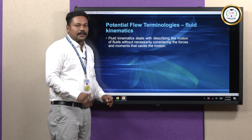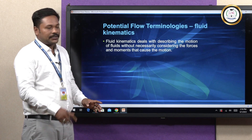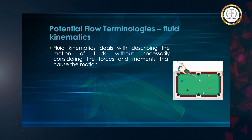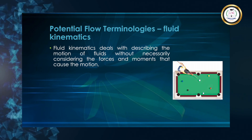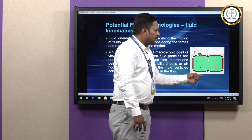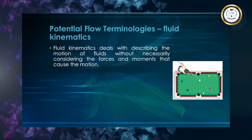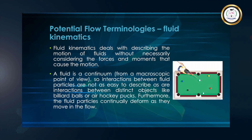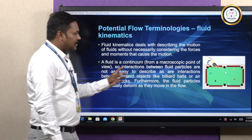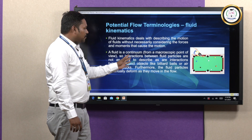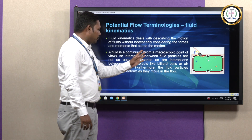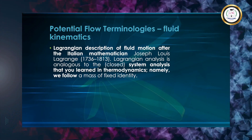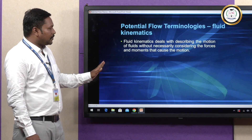Without any forces and moments, we study fluid motion. As an example, we have billiards — you give one force to the white ball, and without directly hitting the target ball, you make it move. This is a macroscopic view of a fluid continuum showing interaction between fluid particles, where distinct fluid particles are moving around the flow. In the microscopic view, without necessarily considering the forces and moments, this is the Lagrangian description of fluid kinematics.